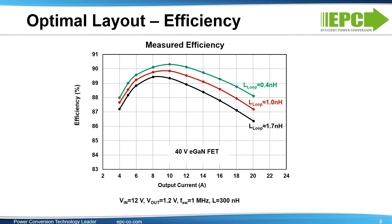The lower the layout inductance, the more efficiency improves. Going from 1.7 nH power loop inductance down to 0.4 nH inductance, achievable with the optimal layout, increases peak efficiency in this 1 MHz buck converter by one full percentage point, or approximately a 10% power loss reduction. Not only does the optimal layout improve the in-circuit performance of eGaN FETs, it also reduces the drain voltage overshoot, which as we'll see in a few minutes, positively impacts EMI.